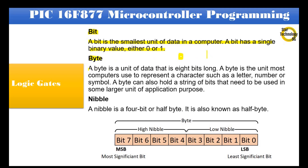Byte: A byte is a unit of data that is 8 bits long. A byte is the unit most computers use to represent a character such as a letter, number, or symbol. A byte can also hold a string of bits that need to be used in some larger unit of application purpose.